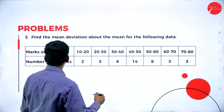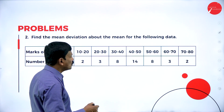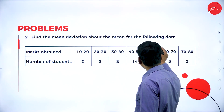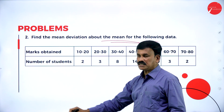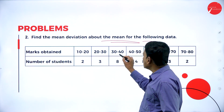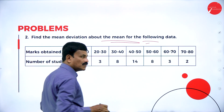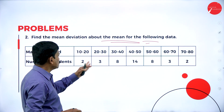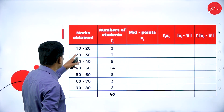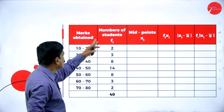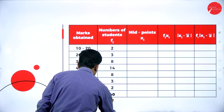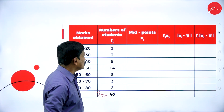Now move on to the next problem: find the mean deviation about the mean for the following data, where a class interval is given. The marks obtained are: 10-20, 20-30, 30-40, 40-50, 50-60, 60-70, 70-80. The number of students is: 2, 3, 8, 14, 8, 3, and 2. Adding sigma fi equals 40.